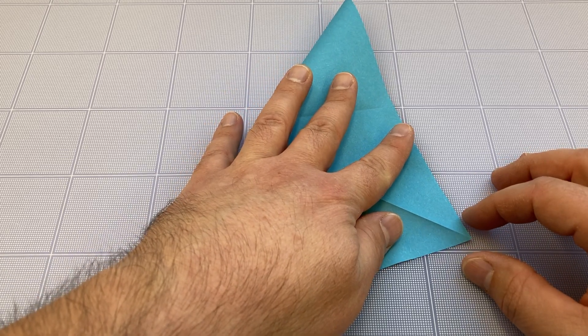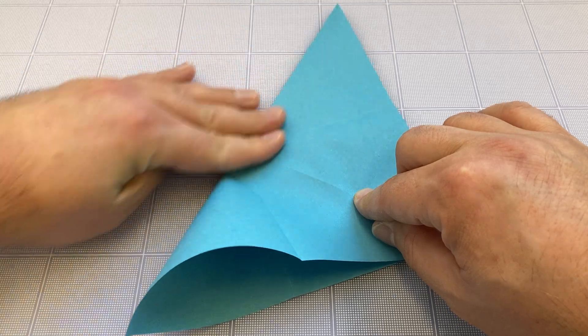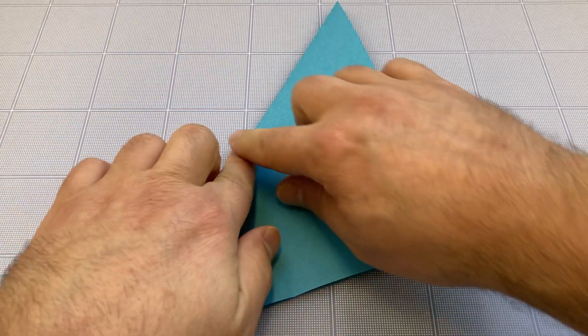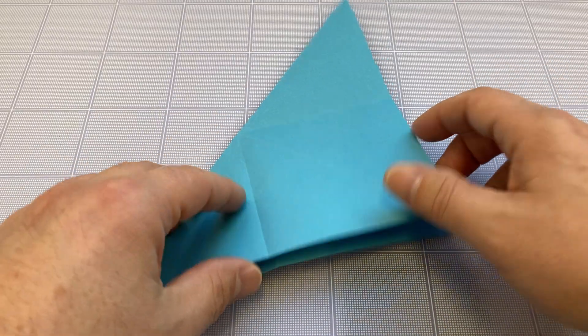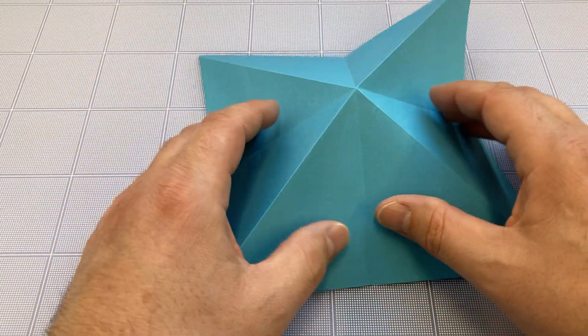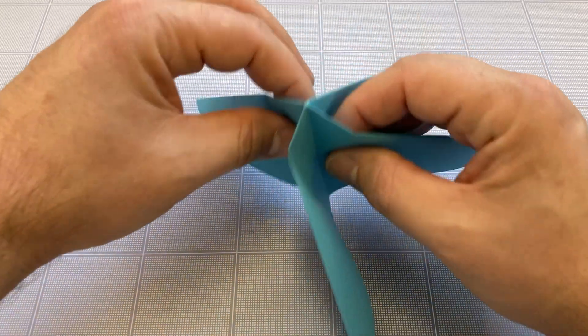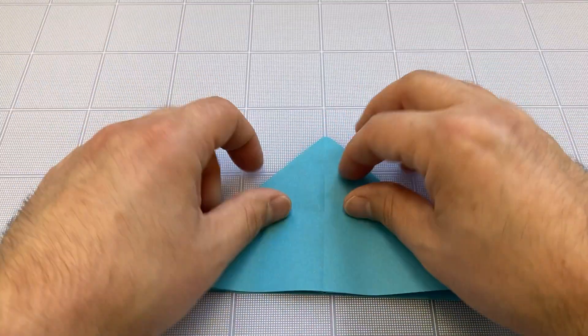Fold opposite corners together and crease that. When I open it up, I can squeeze the valleys in until I get these four flaps, then lay that down flat.